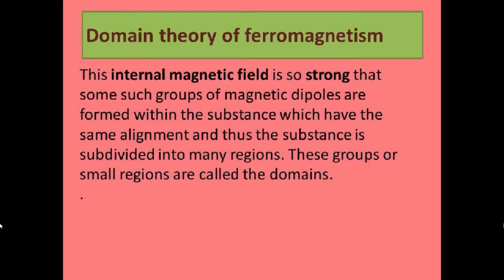This internal magnetic field is so strong that such groups of magnetic dipoles are formed within the substance which have the same alignment. Thus the substance is subdivided into many regions. These groups or small regions are called domains.